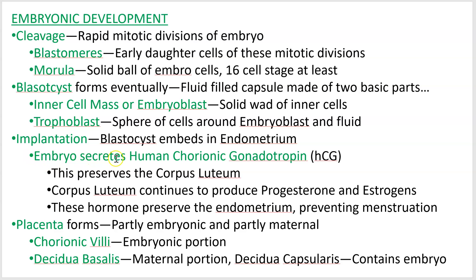The embryo is producing a hormone called human chorionic gonadotropin, or HCG. What chorionic gonadotropin does is tell the mother that there is an embryo, so she shouldn't go through the normal menstrual process. HCG causes the female to preserve the corpus luteum.